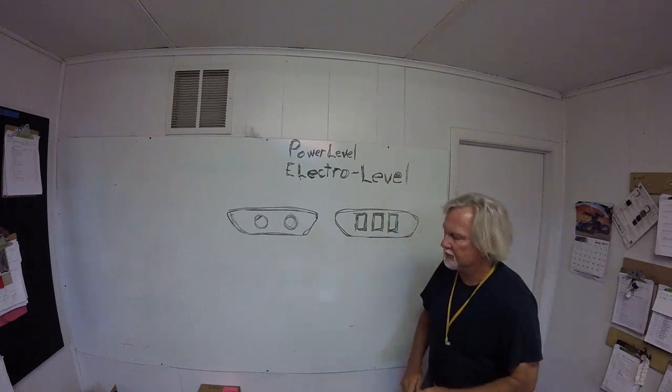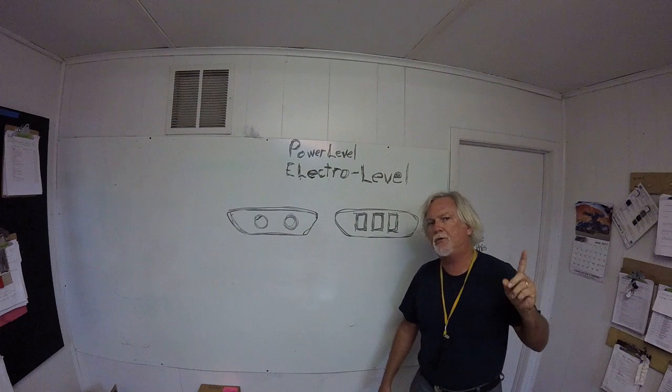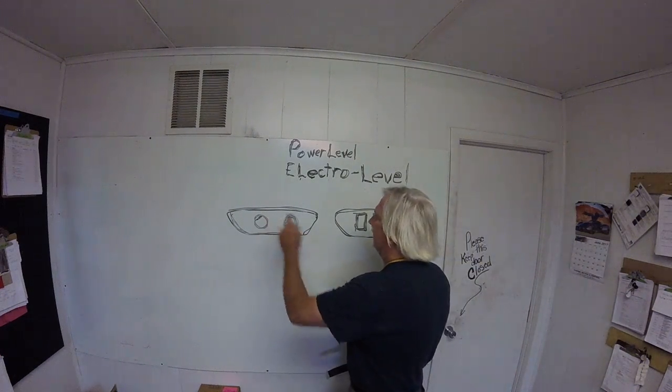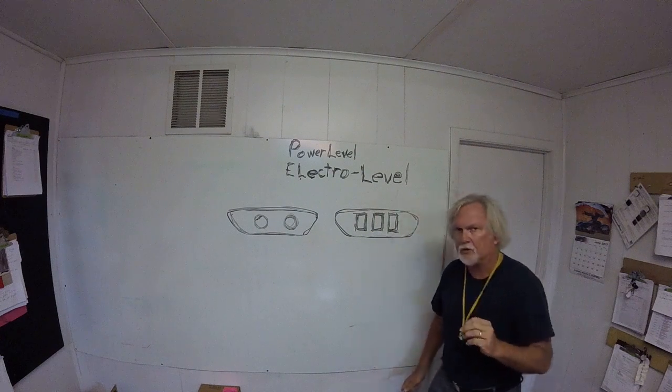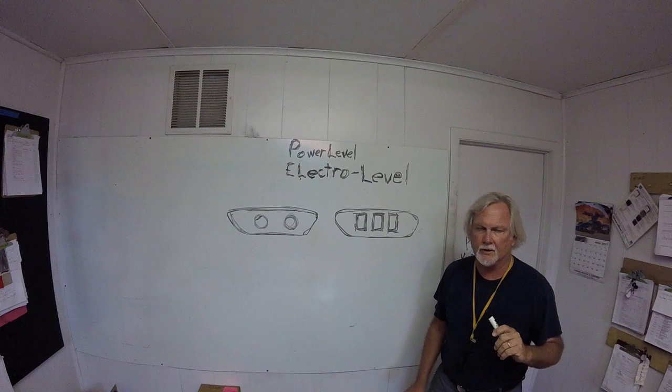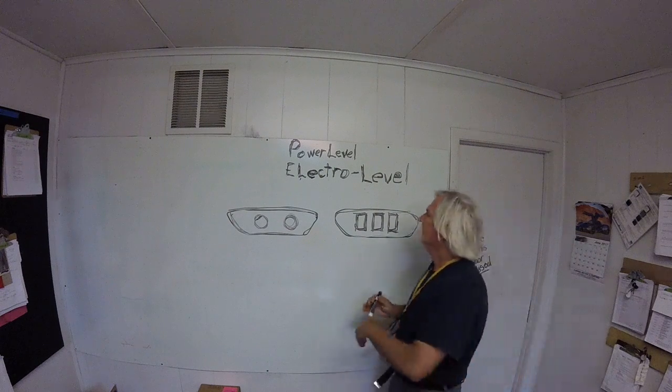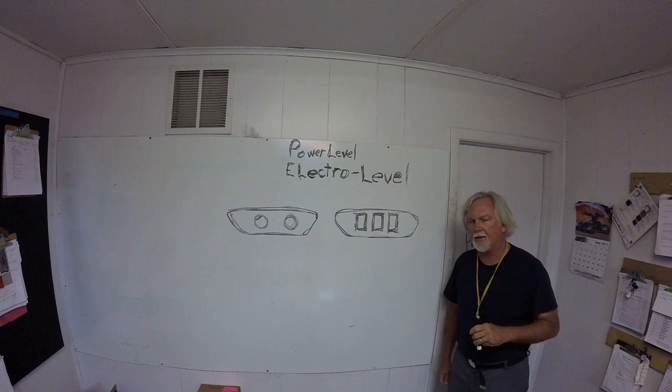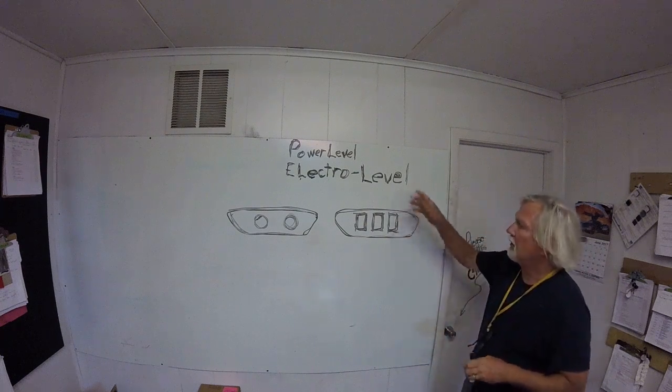Here's how it works. This is a power level system. You've got two knobs. You have two knobs on your dash. It's a mechanical pneumatic system. If you have air in the tank, the knobs are going to work. This is an electro level system. You've got three switches, right? Also, electro level two.